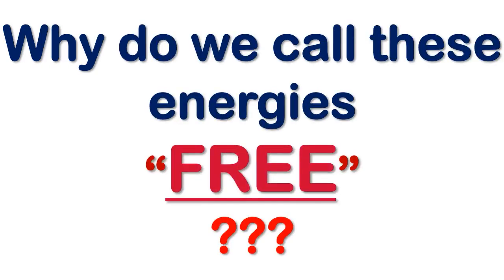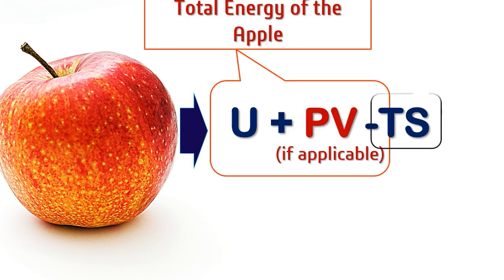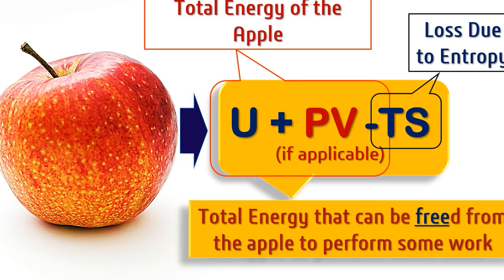Now, why are these called free energy? Helmholtz free energy and Gibbs free energy are called free energy because if you totally annihilate the apple, only that much amount of energy will be available for work. The loss from the total energy — that is, enthalpy — is the entropy term: the TS amount of heat energy will be lost entirely.